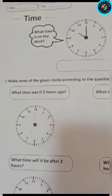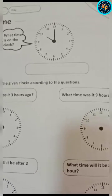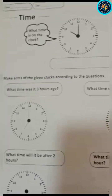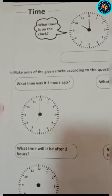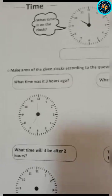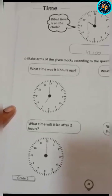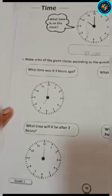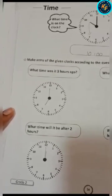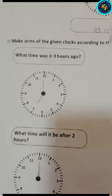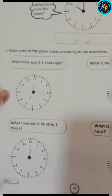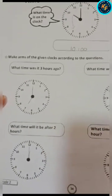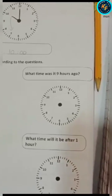Make arms of the given clocks according to the questions. The first question is: what time was it 3 hours ago? You have to find what time was it 3 hours ago. The time is 7 o'clock. Same as that, you have to solve this question.